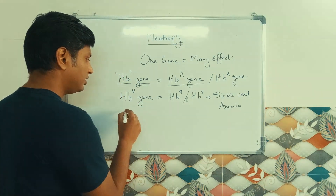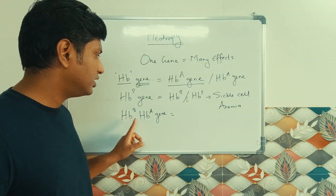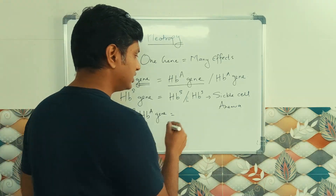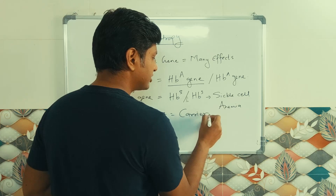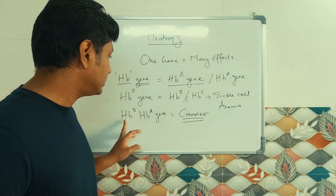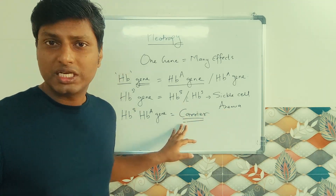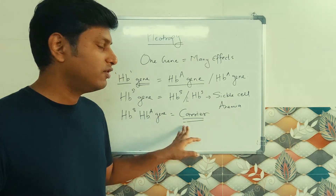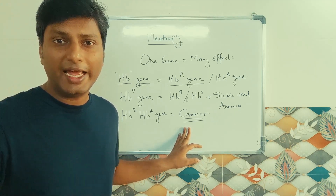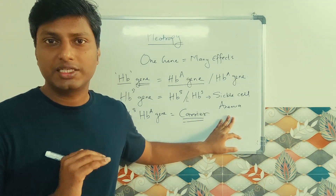Now suppose a person has both the HbS and HbA gene — one sickle cell (defective) gene and one normal gene. Such a person will be a carrier. This person is not going to suffer from sickle cell anemia, but will carry the sickle cell gene. In normal conditions the person will be absolutely fine, but in exceptional conditions like high altitude where there is less oxygen, the person might show symptoms of sickle cell anemia.